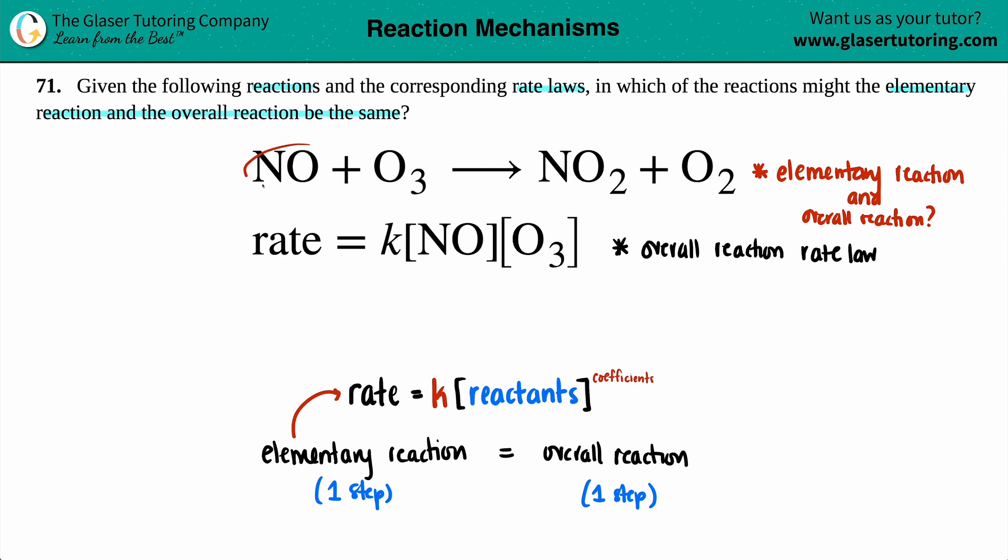In my elementary reaction, I have NO as one of the reactants. And in my rate law, rate equals K times the concentration of NO. So that reactant's there. So far, so good. They have ozone, which is O3. So far, so good. Keep in mind, nobody cares about the products when we write rate laws.